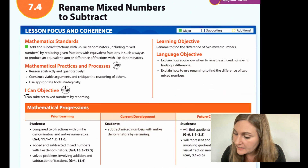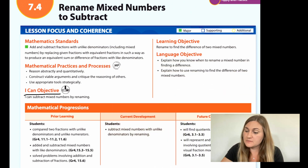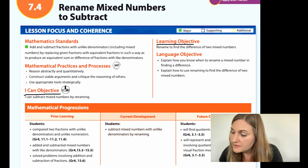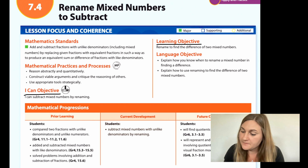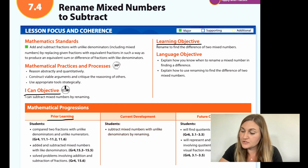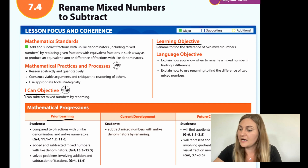I'm going to start off by going over the I can objective that says: I can subtract mixed numbers by renaming. The learning objective is to rename to find the difference of two mixed numbers. The prior learning says students compared two fractions with unlike denominators and unlike numerators, added and subtracted mixed numbers with like denominators, and solved problems involving addition and subtraction of fractions.